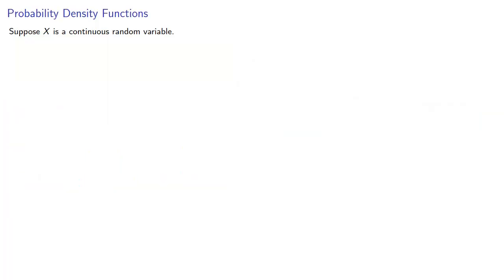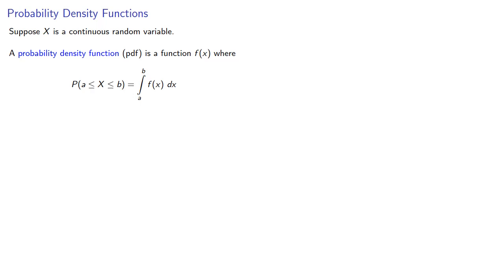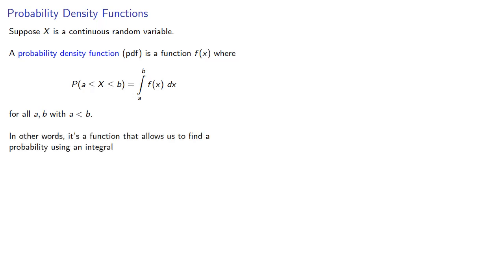This leads to an important idea. Suppose x is a continuous random variable. A probability density function — the PDF — is a function f of x where the probability that the random variable is between a and b is expressed as the integral from a to b of f of x dx, as long as a is less than b. In other words, our PDF is a function that allows us to find a probability using an area.